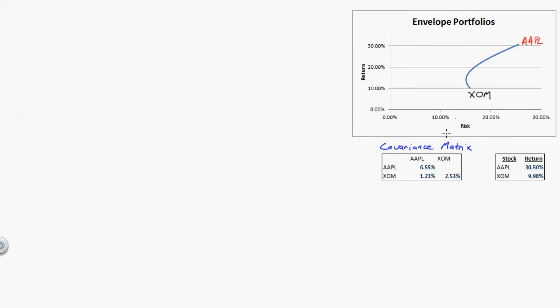This number is the covariance that tells me the relationship. So now I have the risk, return, and relationship for Exxon and Apple, and I'm able to draw this line. Exactly how do I do that?